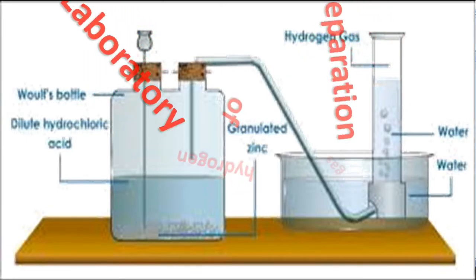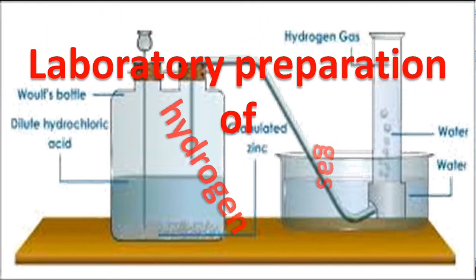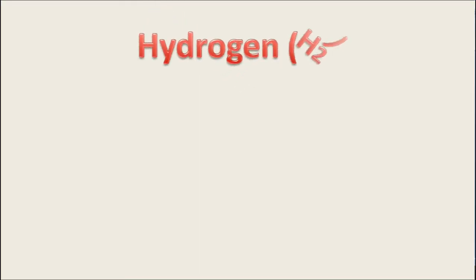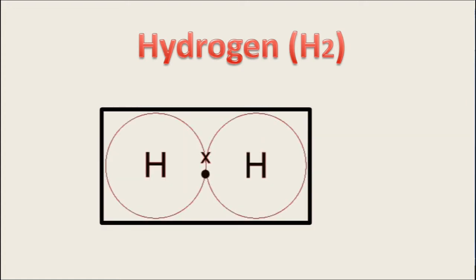Laboratory preparation of hydrogen gas. Hydrogen gas is represented by molecular formula H2. The hydrogen gas is made up of two hydrogen atoms.